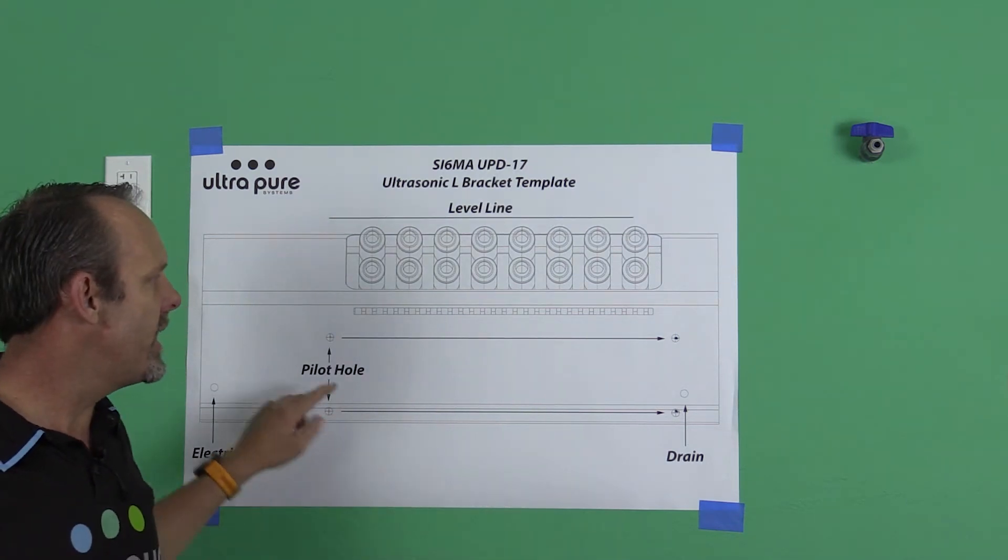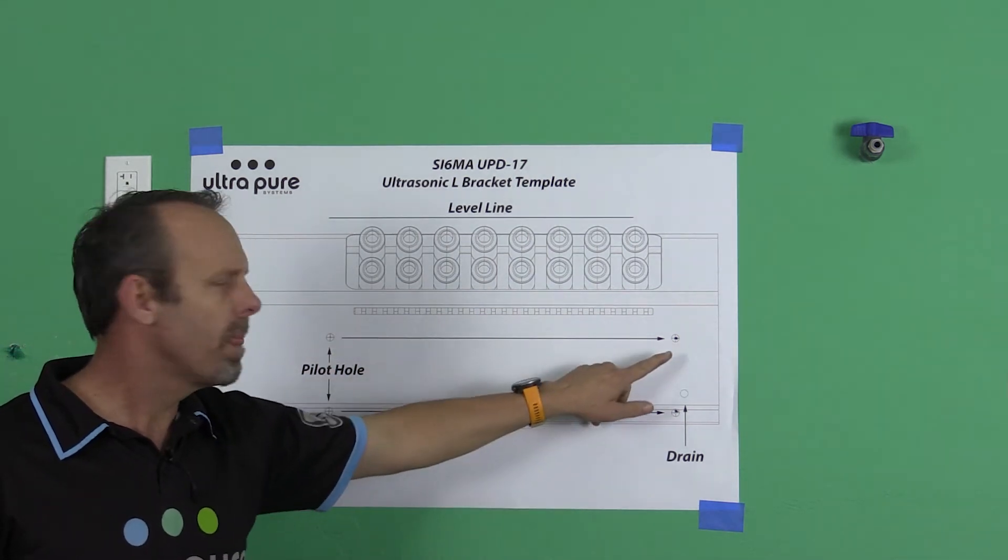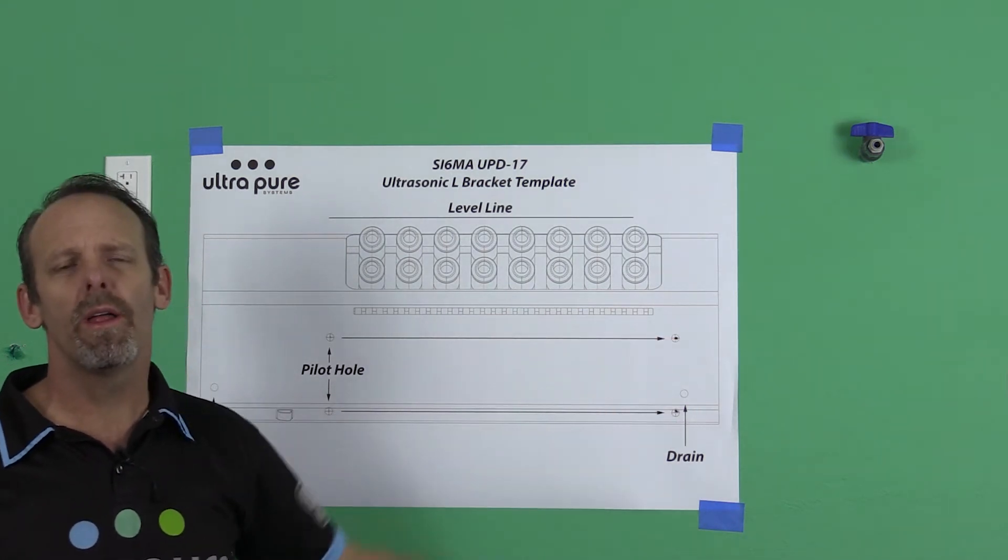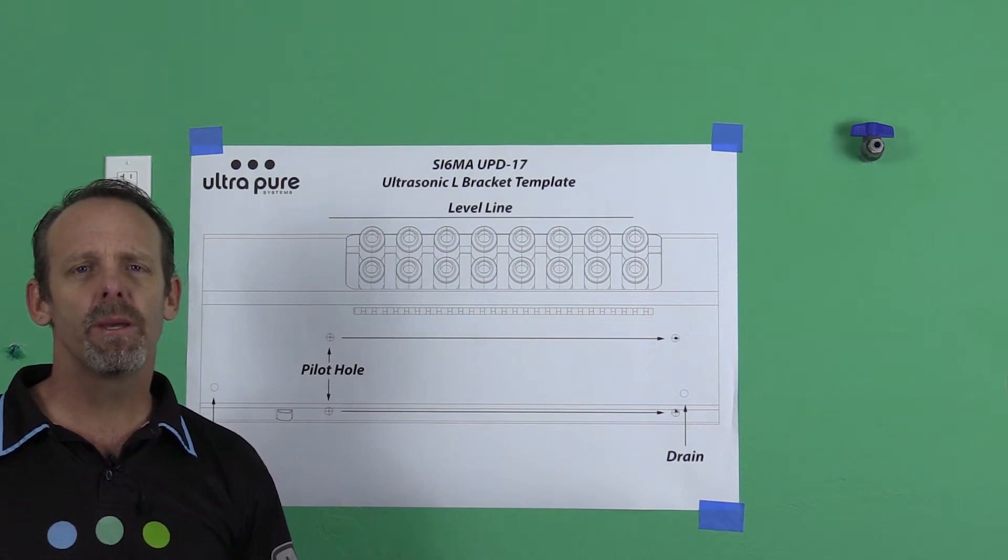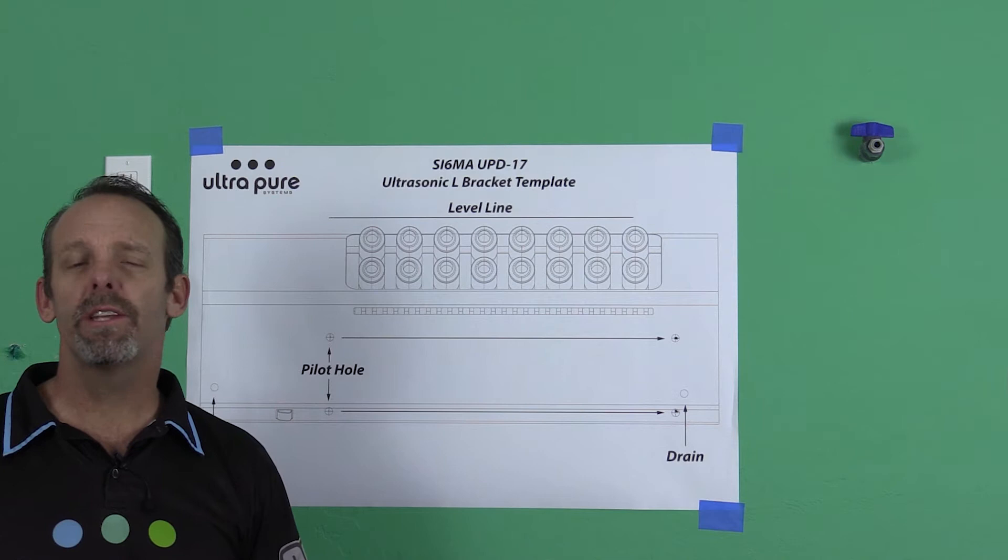The last thing you're going to want to do is with the pilot holes and there's a bullseye with a screwdriver or an awl or something, you're just going to want to push it into the wall and that will mark where your L brackets are going to be. Fairly simple. At that point, you can take the template off the wall and it served its purpose.